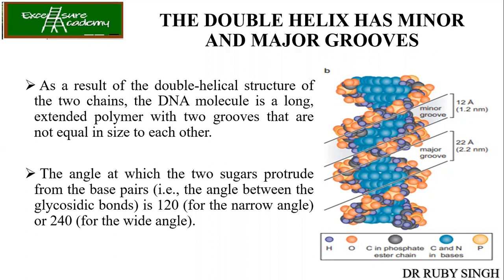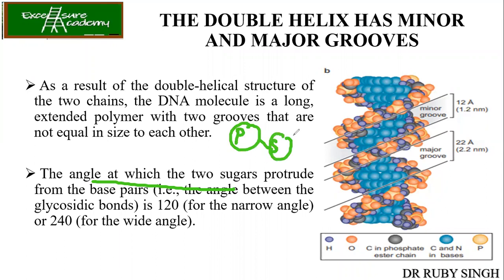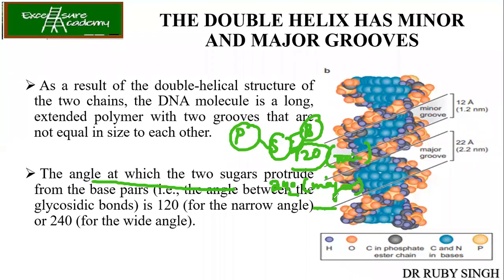We will discuss in detail about the major and minor grooves. As a result of the double helical structure, the DNA molecule is a long extended polymer with two grooves that are not equal in size. The angle at which two sugars protrude from the base pair — the angle between the glycosidic bonds — is 120° in the case of the minor groove and 240° in the case of the major groove. The glycosidic bond is formed between the sugar and the base.